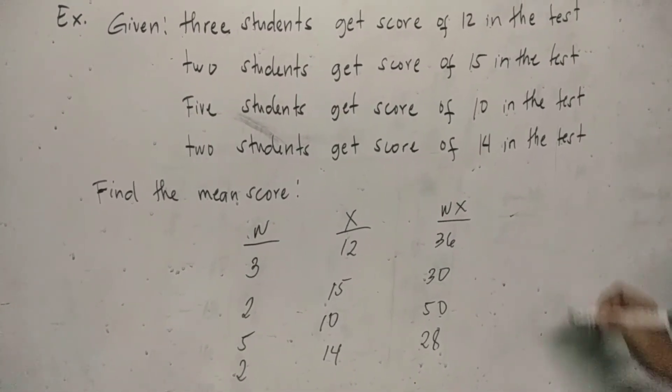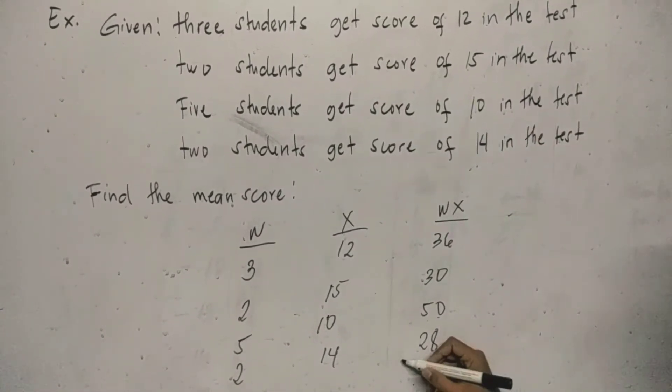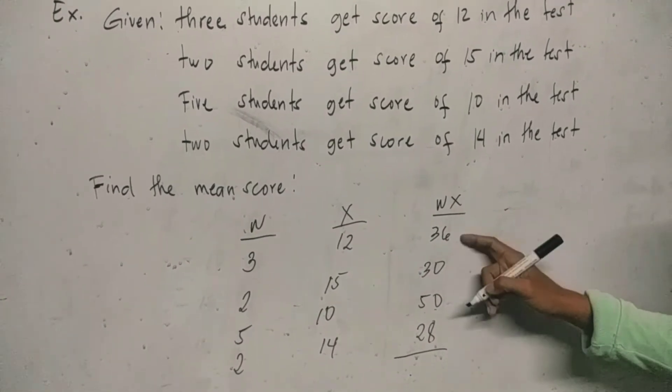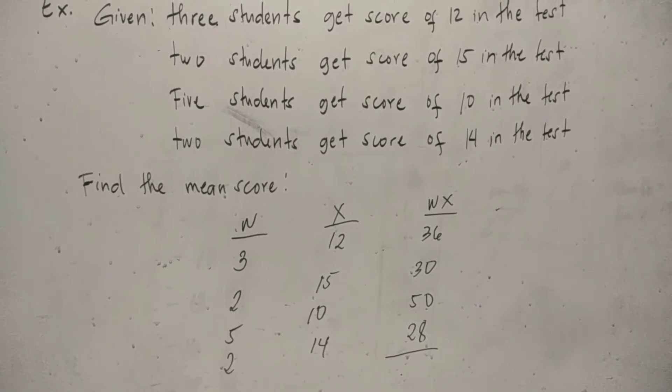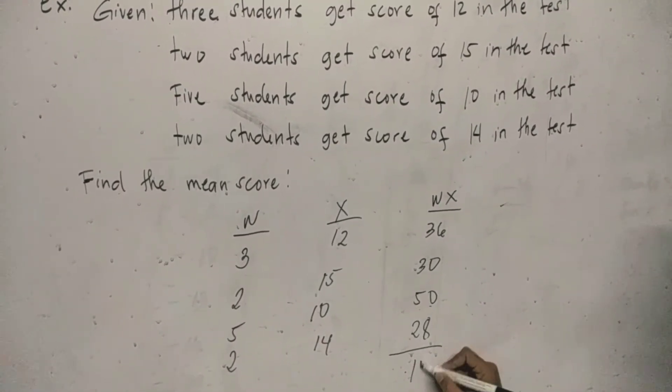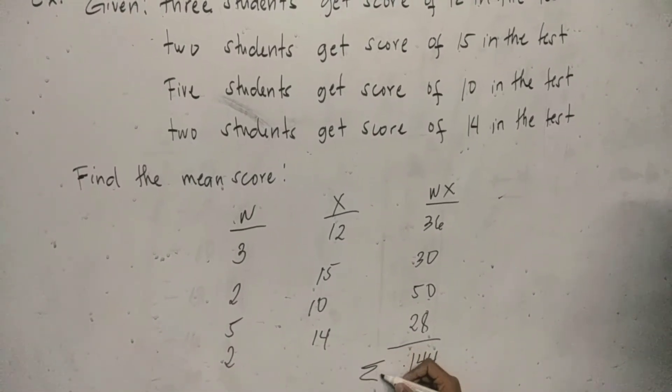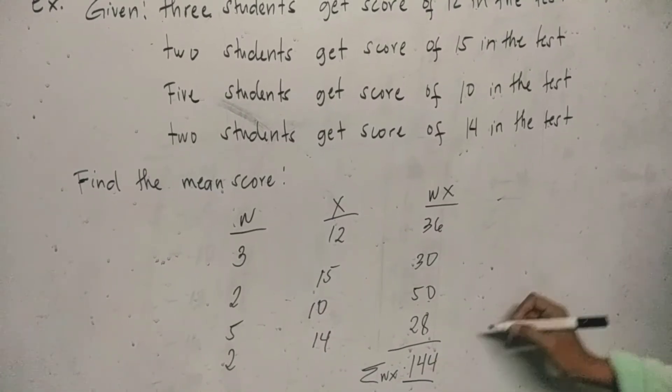Then as we observe, we add the values of the product of w and x. So we add 36 plus 30 plus 50 plus 28 is equal to 144. This is the summation of wx.